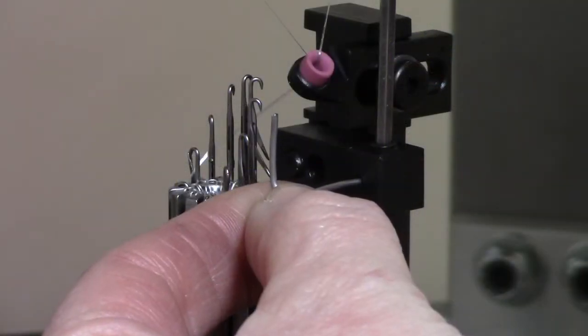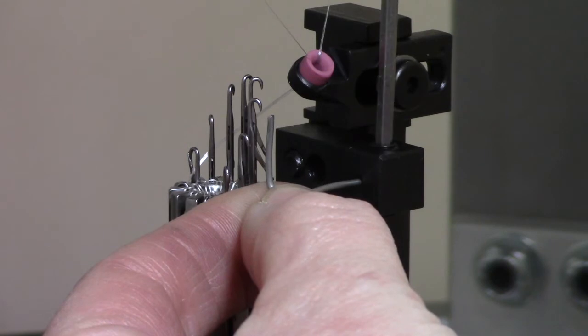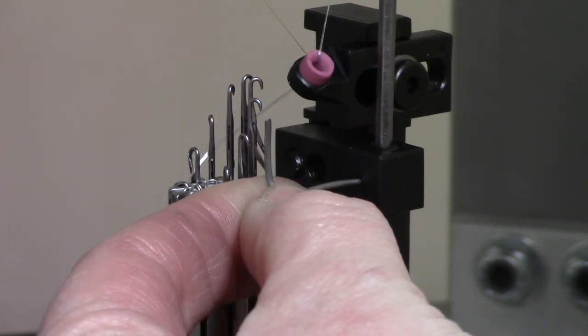Once the position has been set in the desired location, re-tighten the set screw with a 3/32 Allen wrench.